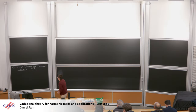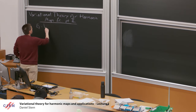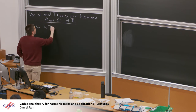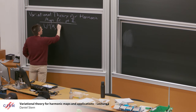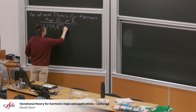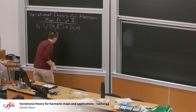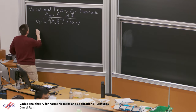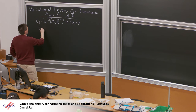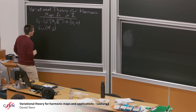Where did we leave off last time? So remember, we defined these Ginzburg-Landau functionals. For a general target embedded in some R^L, here we're thinking about the n-sphere in R^(n+1) specifically. Based on the Li-Yau conformal volume, we had this min-max energy we introduced: E_n^epsilon on the surface with some reference metric.